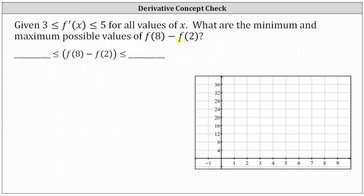Notice how this difference would be the change in y. The derivative function value indicates the instantaneous rate of change of the function at a particular value of x. So the minimum possible value of f of 8 minus f of 2 would occur when the derivative is at its least possible value of 3, and the maximum would occur when the derivative is at its greatest possible value of 5.